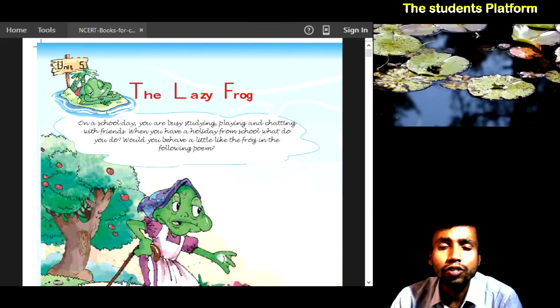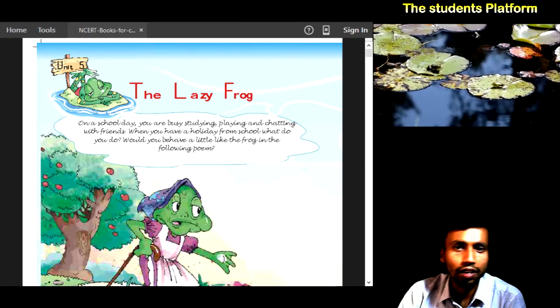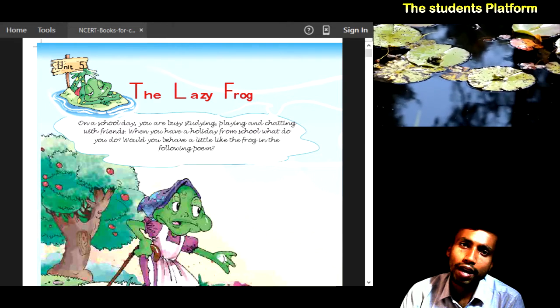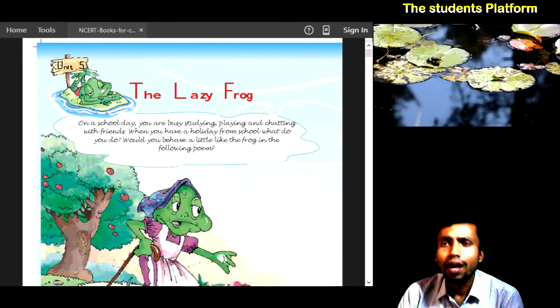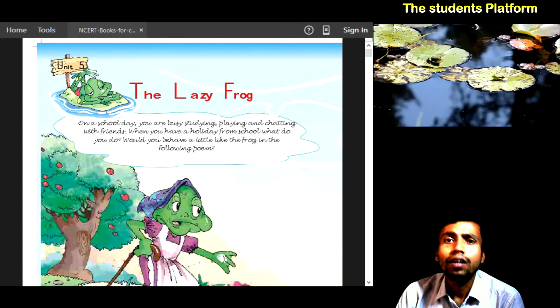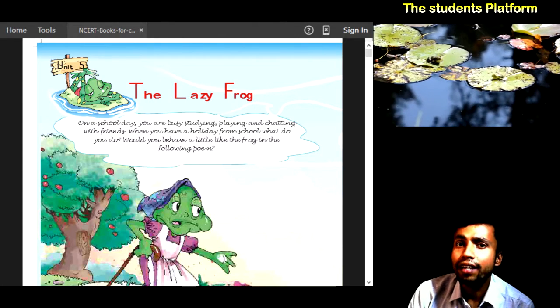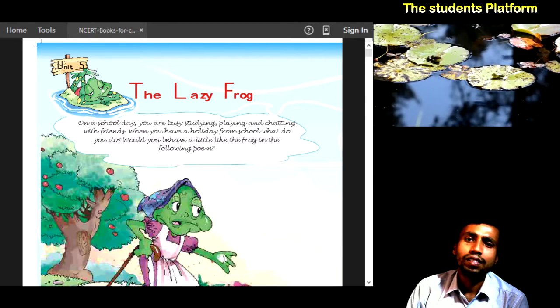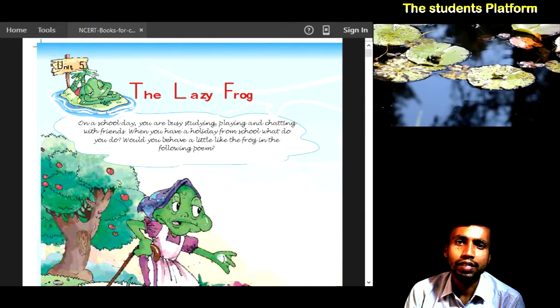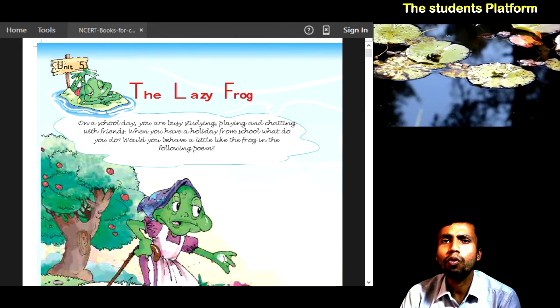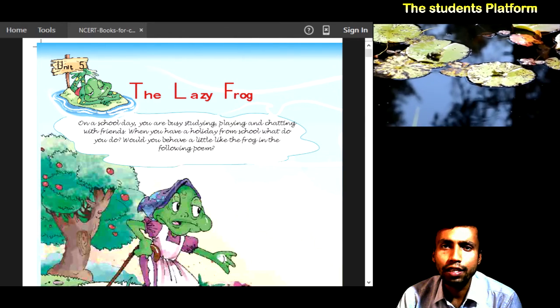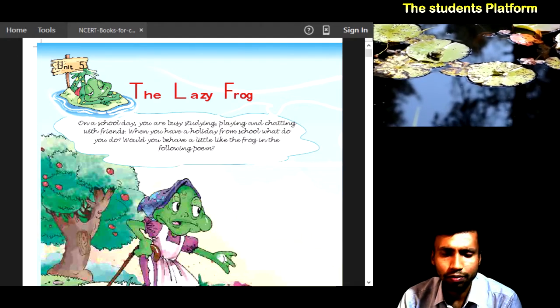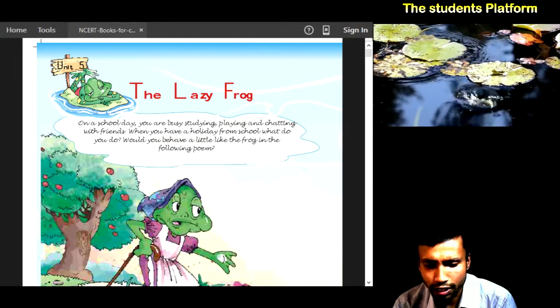Hello students, today I'm going to recite a new poem. This poem belongs to standard 5 from the Marigold book, and in this lesson we will explain its Hindi explanation as well with question answers and other vocabularies. The poem name is The Lazy Frog. It is in unit 5, so let's start reciting this poem.